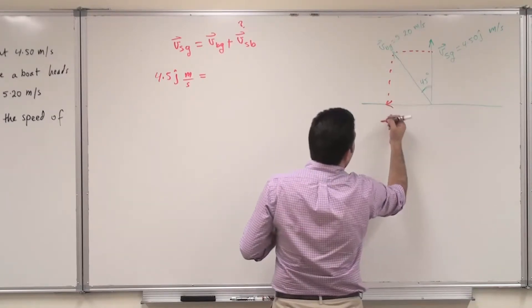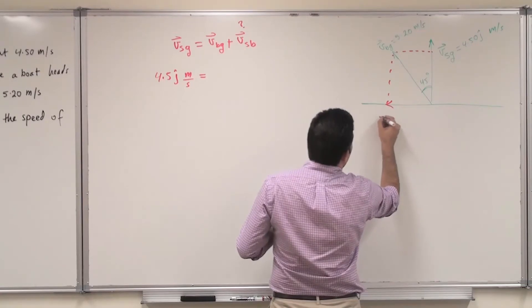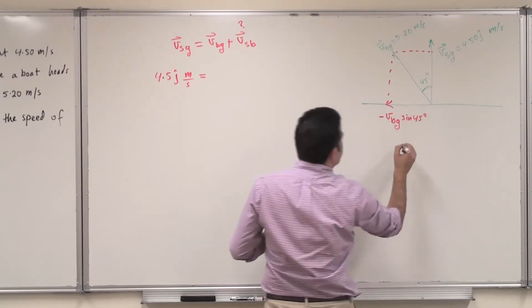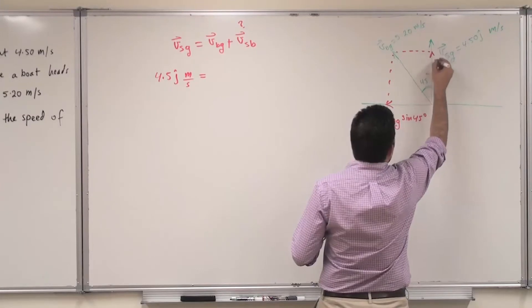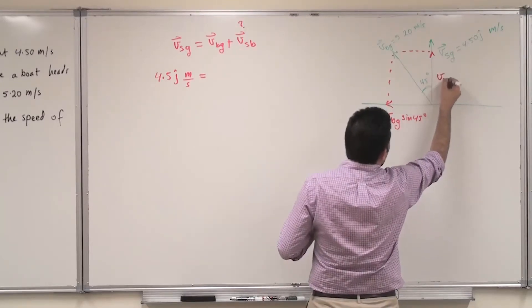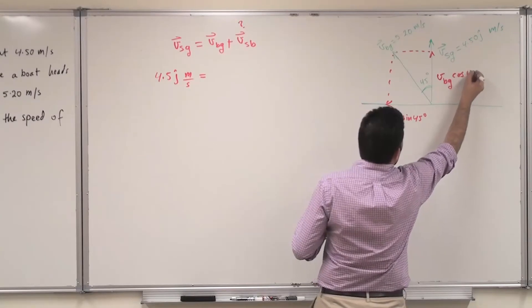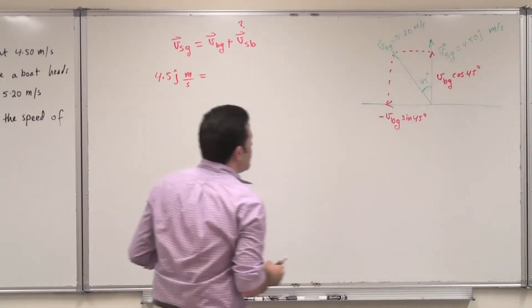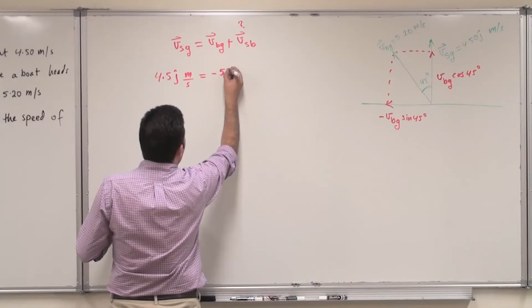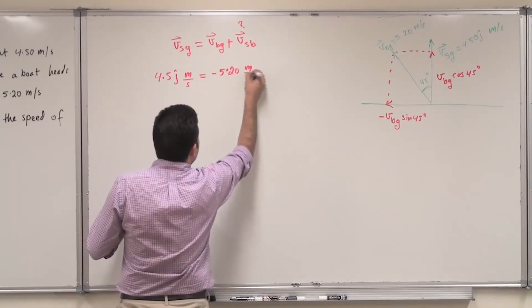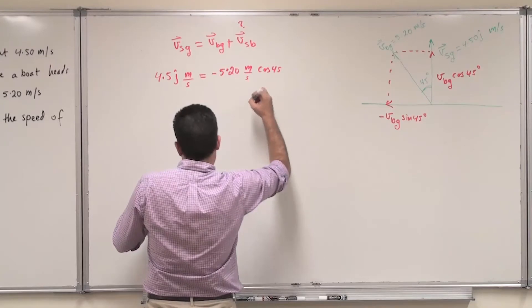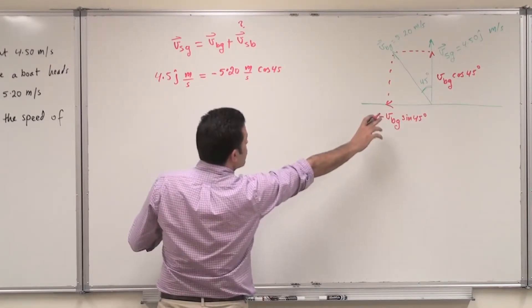The boat's velocity has a negative x-component: minus 520 sine 45 degrees, and a positive y-component: 520 cosine 45 degrees. Written as a vector, it is minus 520 cosine 45 i-hat plus 520 sine 45 j-hat, where the negative sign indicates it points in the negative x-direction.